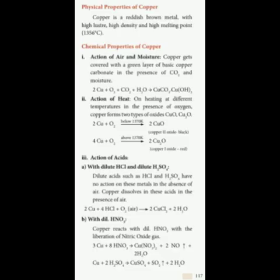The physical properties of copper: copper is a reddish-brown metal with high lustre (shining property), high density, and a high melting point of 1356°C. Because of these properties, copper is used in electrical cable wires.